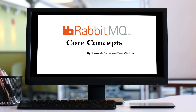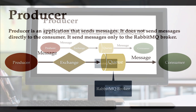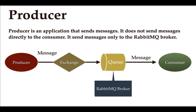First, we'll take a look into producer. A producer is basically an application that sends messages. It does not send a message directly to the consumer — it sends a message only to the RabbitMQ broker.